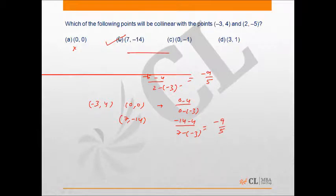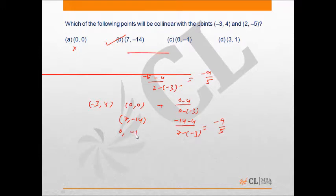But before closing this problem, let's verify whether the slope of a taken point out of the two given points and one from the option gives the same slope as the line formed by the two given points or not. When we take option three, that is (0, -1):